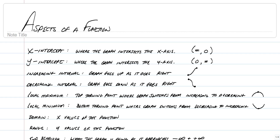Hello ladies and gentlemen, this is Mr. Longo here and we are going to cover certain aspects of functions in this video. So a function is an equation that you could graph and it's going to have a whole bunch of different things you can talk about, such as x-intercepts and y-intercepts. The x-intercept is where the graph will intersect the x-axis and it can do that multiple times. You have a y-intercept and that's where the graph intersects the y-axis, but it could only do it once if it's a function.